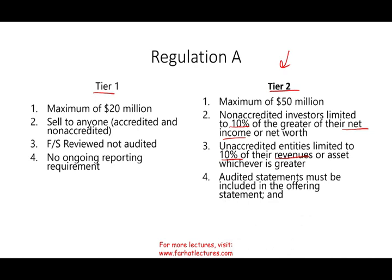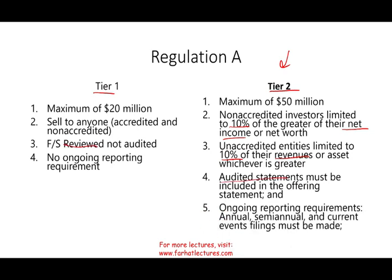Under Tier 2, you must have audited financial statements — not just reviewed — and you must have ongoing reporting requirements: annual, semi-annual, press releases, and so forth. Under Tier 2, you have a little more to do, but you can raise more money and still be exempt under the Securities Act of 1933.